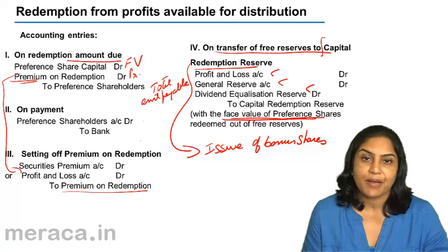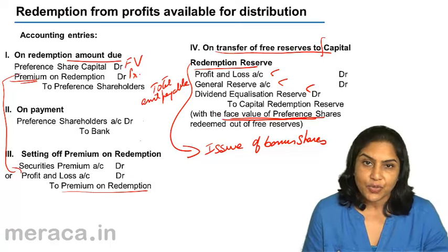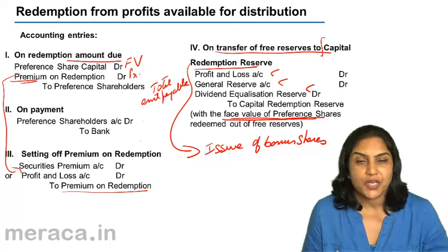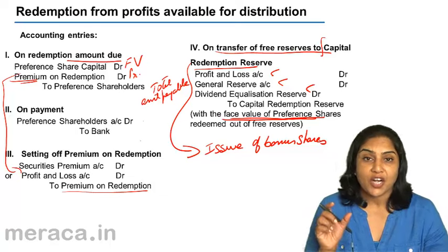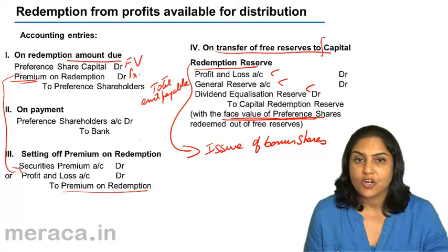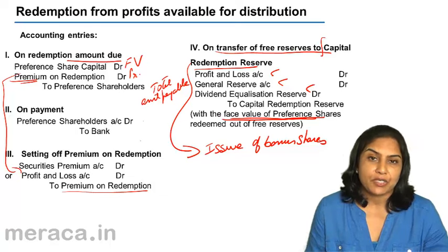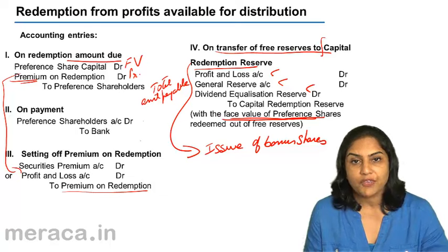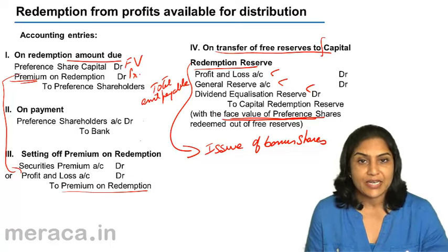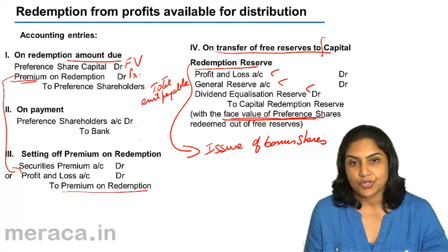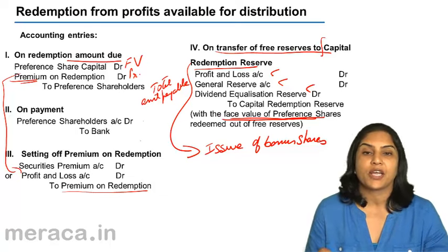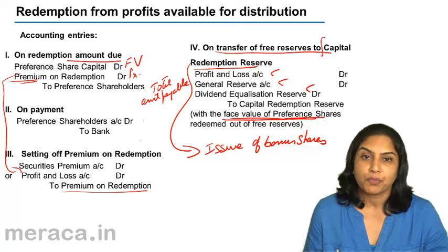Take the transfer from the general reserve if there is a balance there, from the dividend equalization reserve if there is a balance there, or from the profit and loss account if there is an adequate credit balance. Profit and loss account, general reserve account, or dividend equalization reserve account debit, as the case may be, to capital redemption reserve. The capital redemption reserve account can be used only for the purpose of issue of bonus shares.